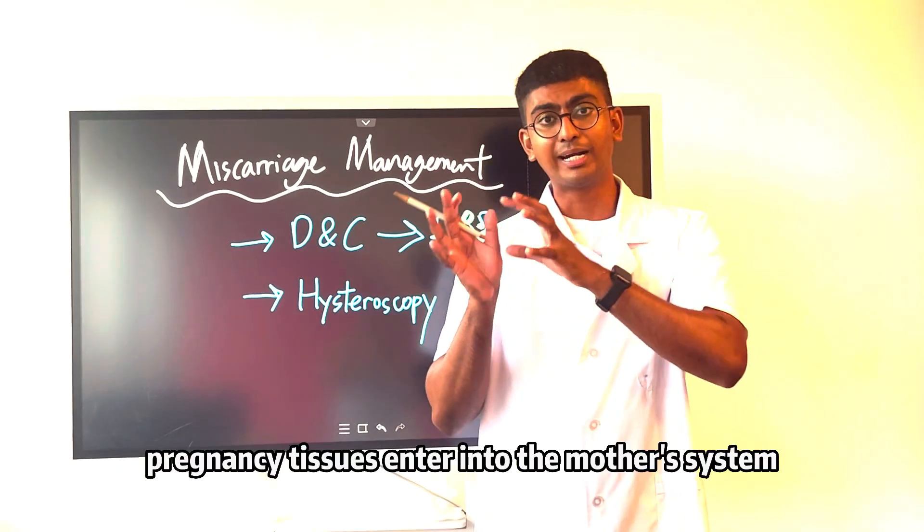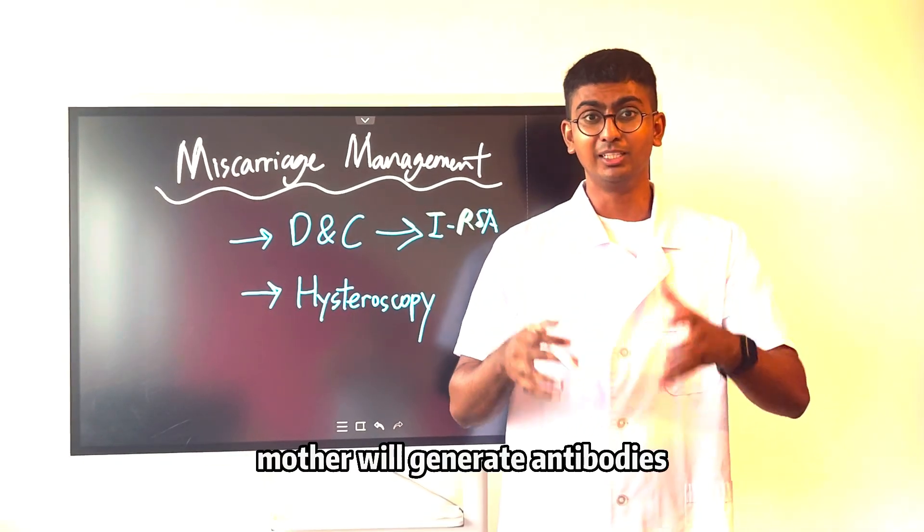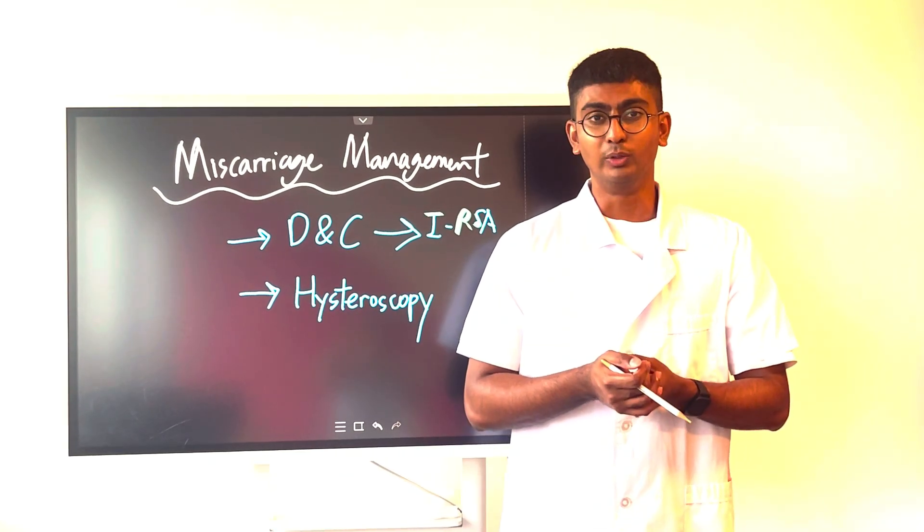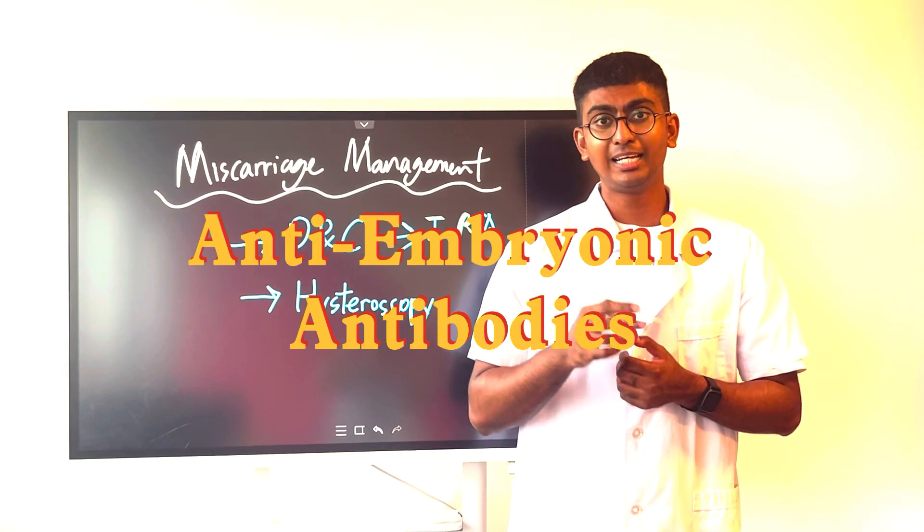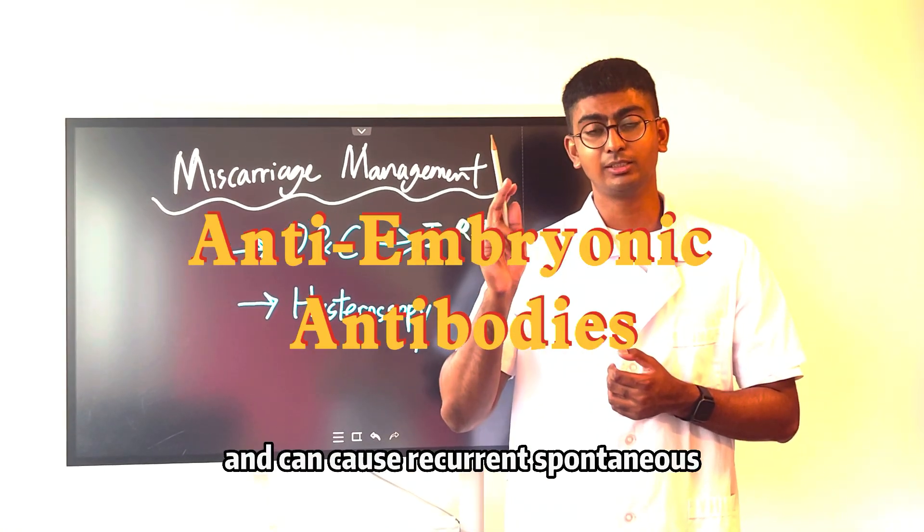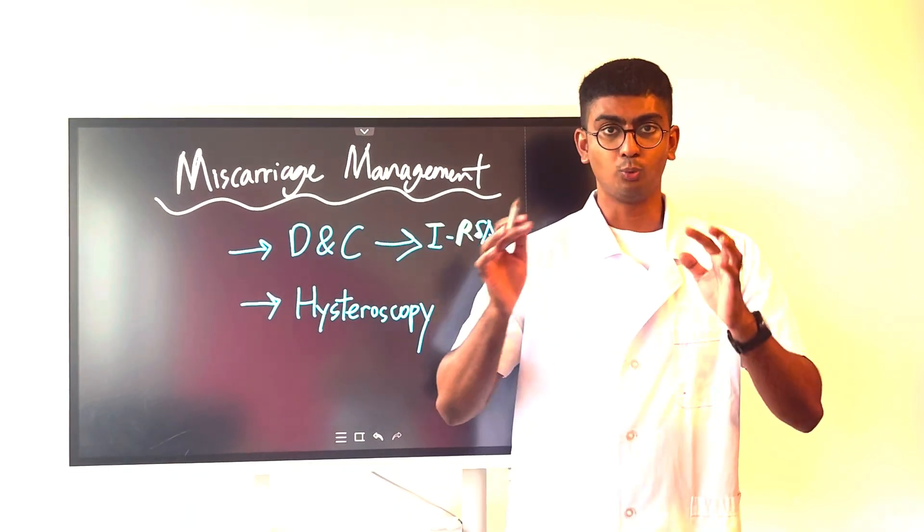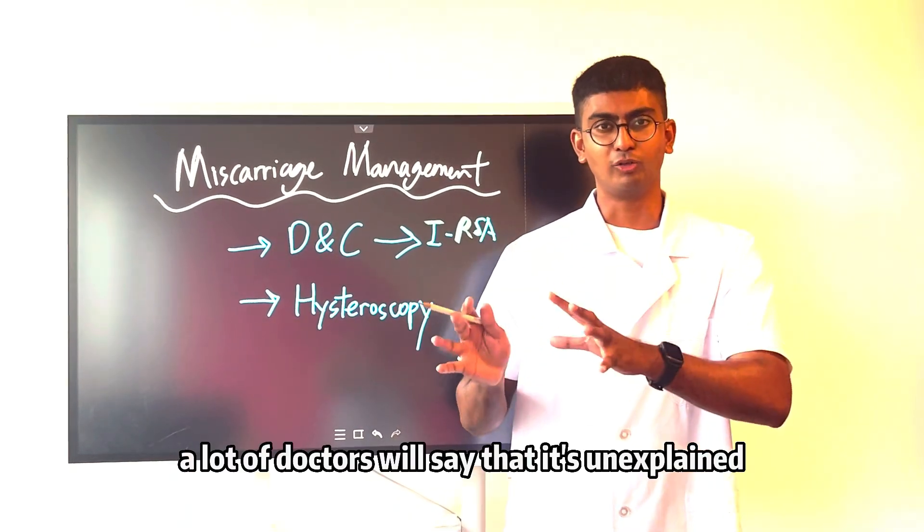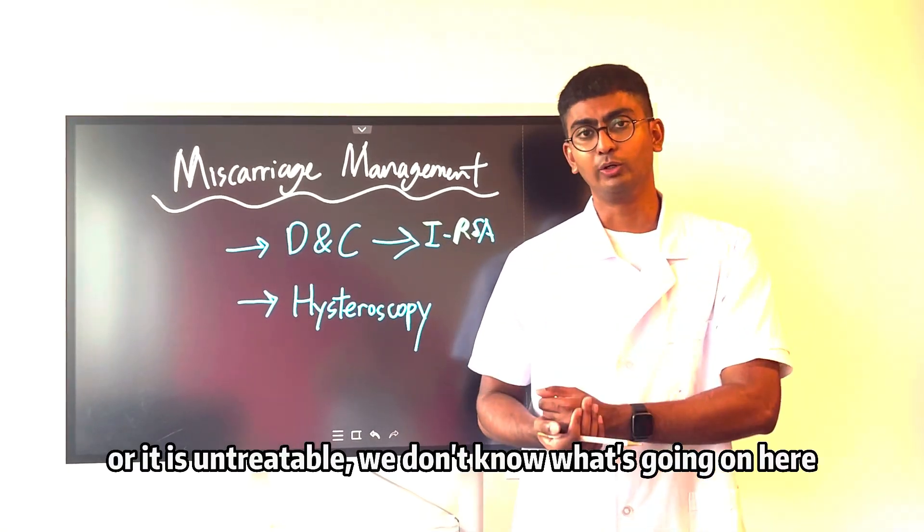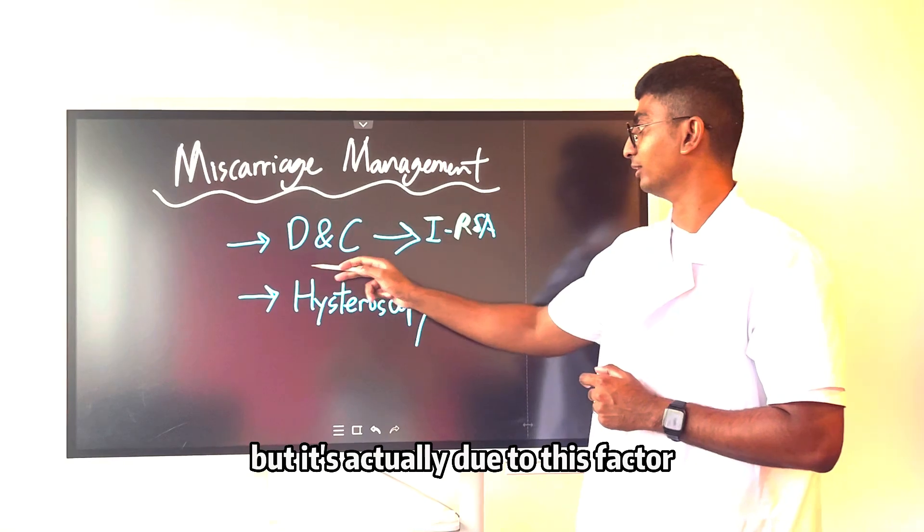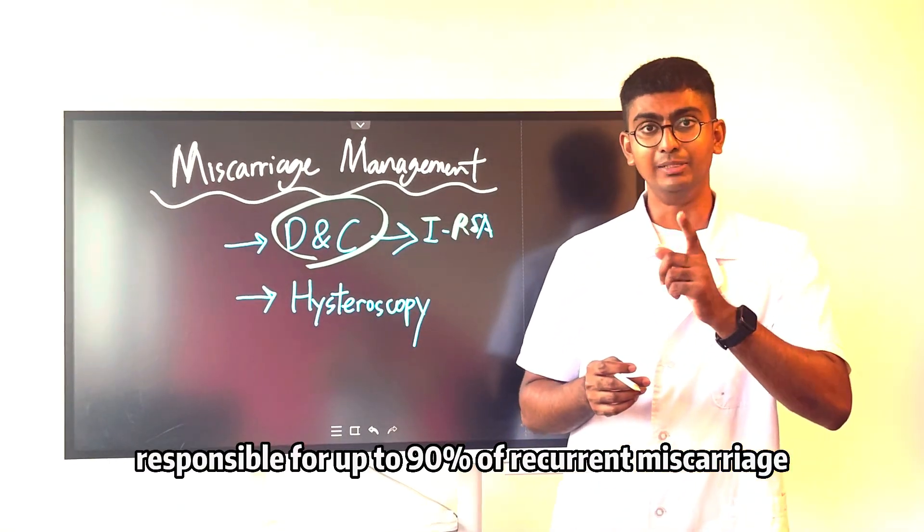When these pregnancy tissues enter into the mother's system during this process, mother will generate antibodies known as anti-embryonic antibodies, which is coined by Antai Hospital and can cause recurrent spontaneous abortions or recurrent miscarriage in your subsequent pregnancies with the same partner. A lot of doctors will say that it's unexplained or that it's untreatable, we don't know what's going on here, but it's actually due to this factor alone, responsible for up to 90% of recurrent miscarriage.